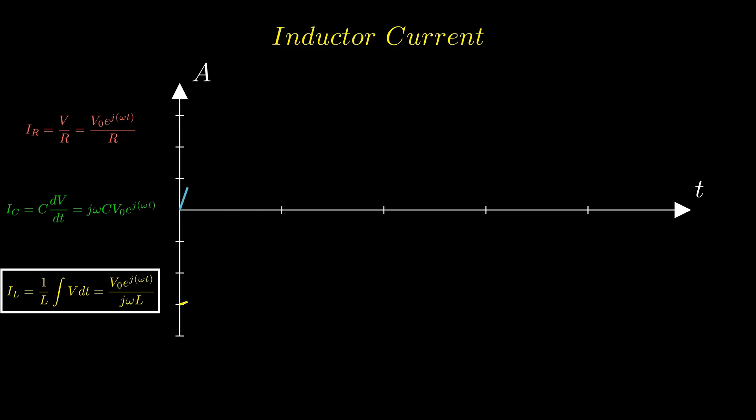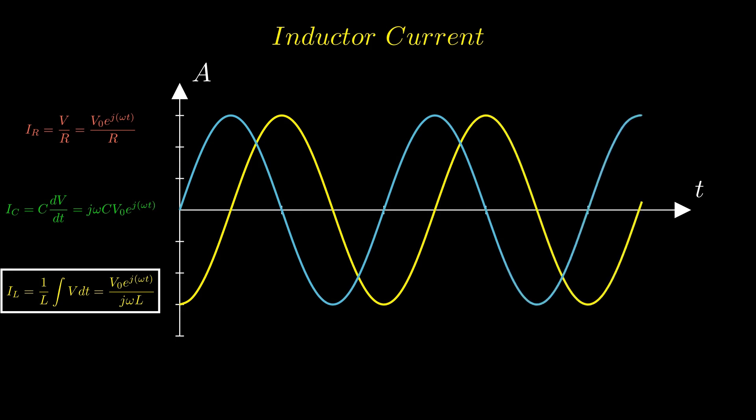We see that the exact opposite happens in an inductor. An inductor resists change in current, therefore the voltage must rise or fall first in order to create the desired change in current.